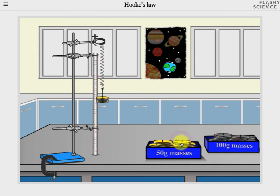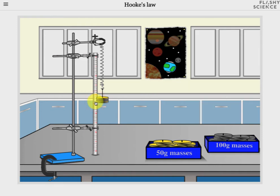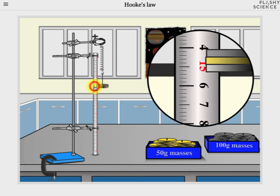To view the new position of the holder click on the ruler again and the centimeter scale is shown. You can remove the masses by clicking on the mass holder to return each mass in turn to its appropriate box, and you can measure the extension of the spring at each point again.